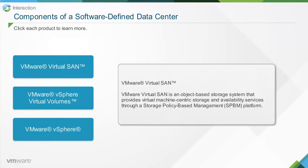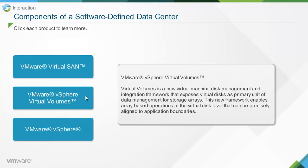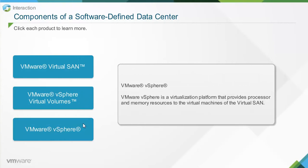VMware Virtual SAN is an object-based storage system that provides virtual machine-centric storage and availability services through a storage policy-based management, or SPBM, platform. Virtual Volumes is a new virtual machine disk management and integration framework that exposes virtual disks as its primary unit of data management for storage arrays, enabling array-based operations at the virtual disk level precisely aligned to application boundaries. VMware vSphere is a virtualization platform that provides processor and memory resources to virtual machines of the virtual SAN.